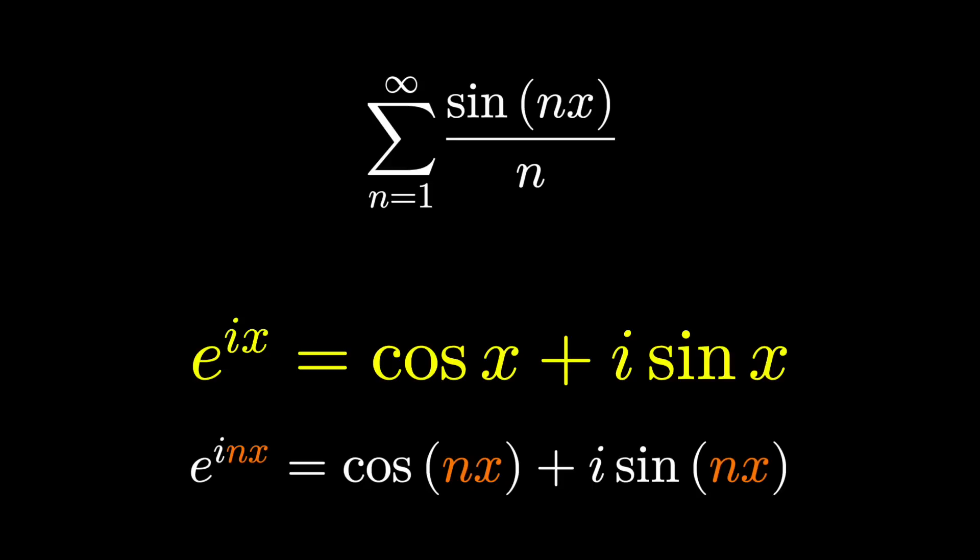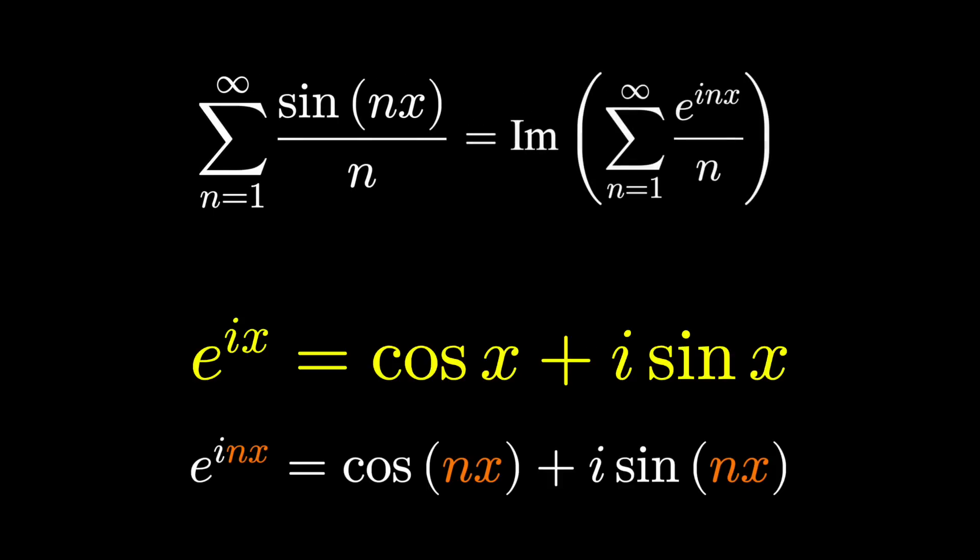Now I'd love to just replace the sine nx with e to the i nx, however in Euler's formula, the sine piece is only the imaginary part of Euler's formula. So the way we get around this, we replace sine with e, however we restrict it to only the imaginary part.